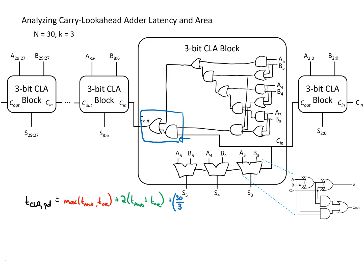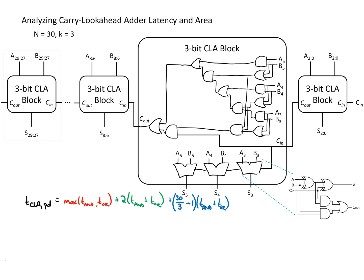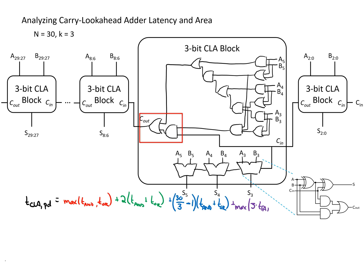We're interested in when the carry signal gets into the last carry lookahead block, so we subtract one, giving us (N/K - 1) blocks. We need to account for the delay of the region in blue, which involves both the delay of an AND gate and the delay of an OR gate. The final element is the amount of time it takes to go through the final carry lookahead block, and there are two possible critical paths to consider.